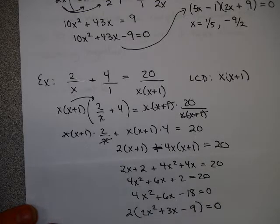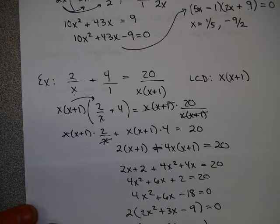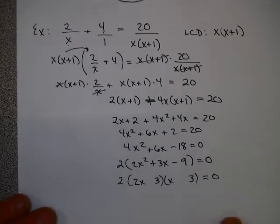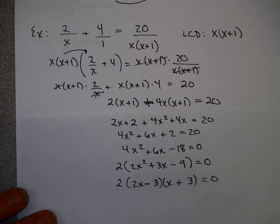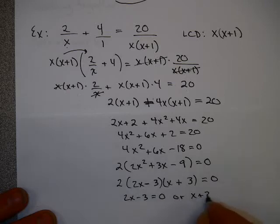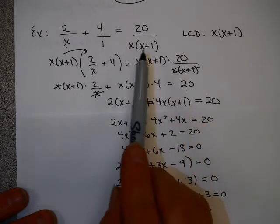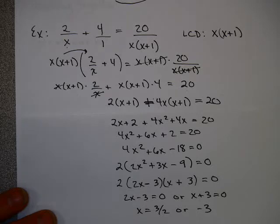And again, believe it or not, this will factor. They don't all factor. I do want you to understand that sometimes you will have to use the quadratic formula. But this one does factor into this. I need a plus 3, so this gives me a 6. This gives me that. So that gives you 2x-3=0 or x+3=0. So x equals 3/2 or negative 3. Neither of those are the restricted inputs of 0 or negative 1. You again can check these to see what happens here.